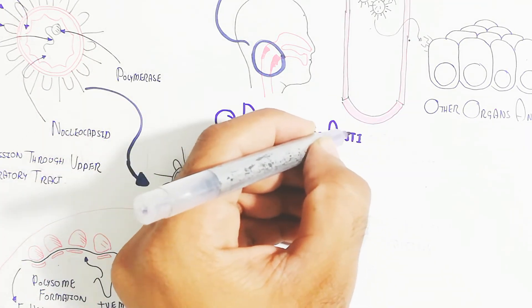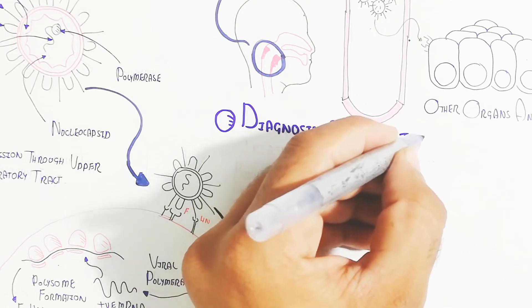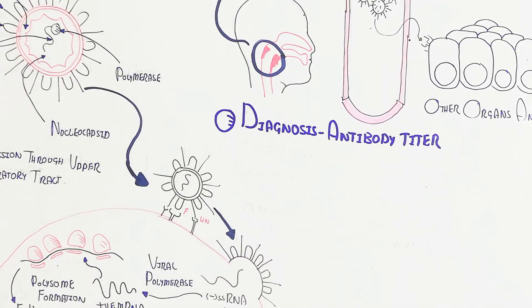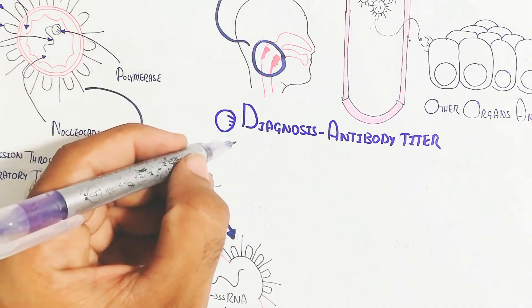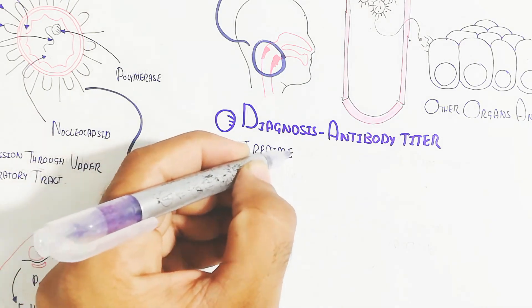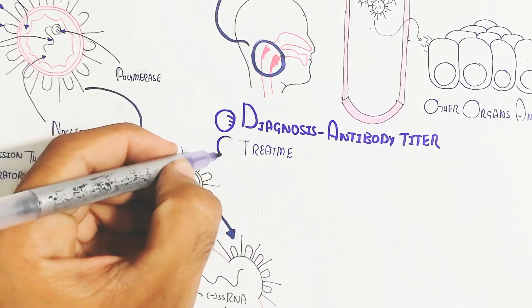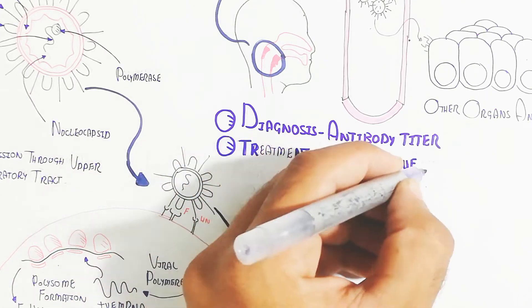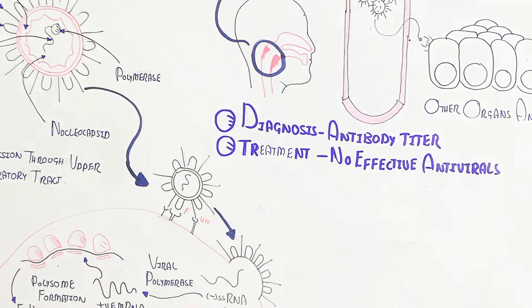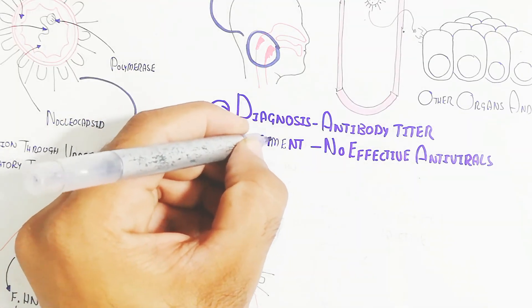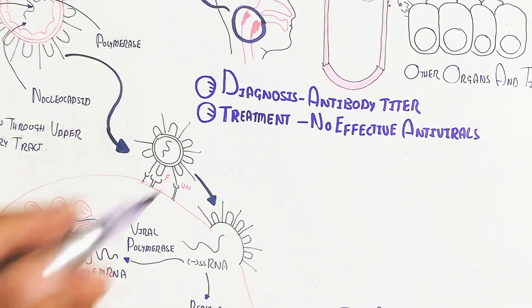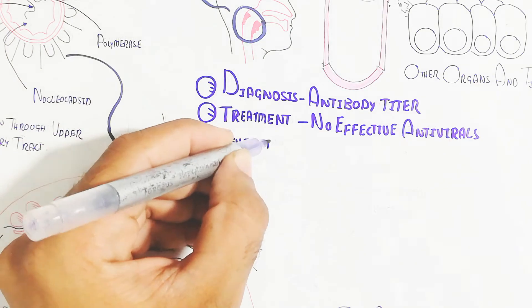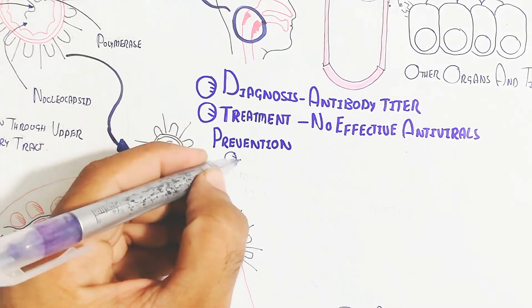Let's begin to understand the diagnosis, the antibody titer, and treatment. No effective antiviral drugs, but the treatment is before the infection of mumps virus through vaccination. This is the prevention mechanism. Let's begin to understand prevention after the infection and before the infection.